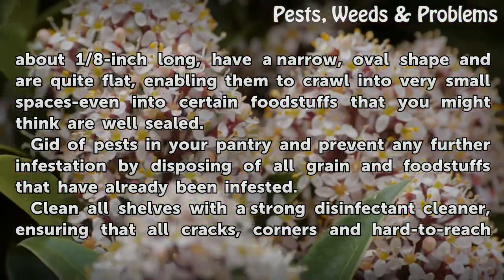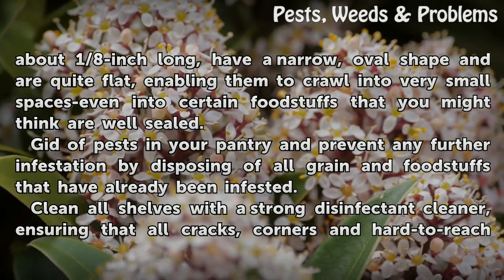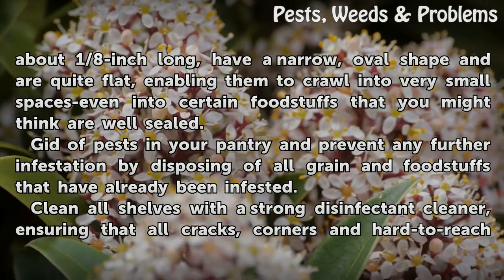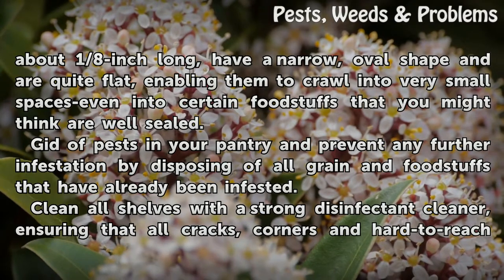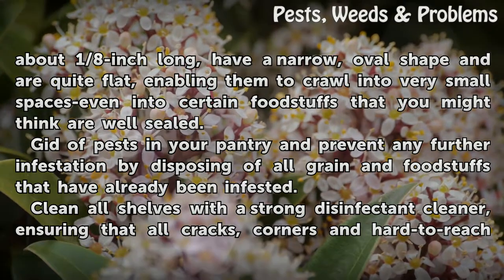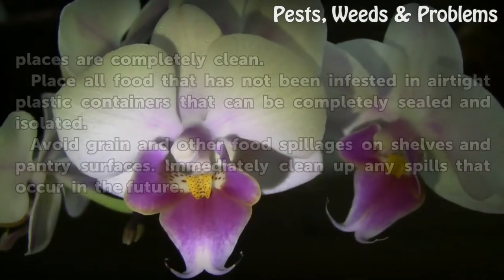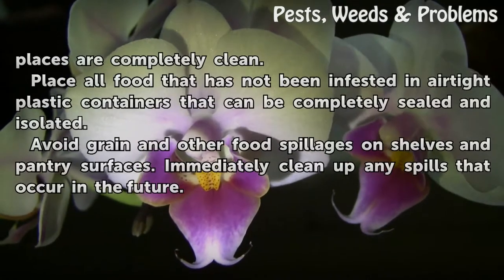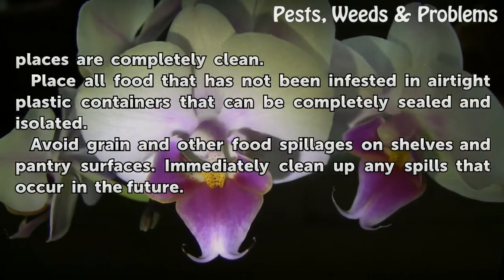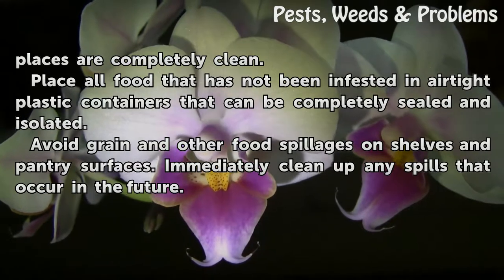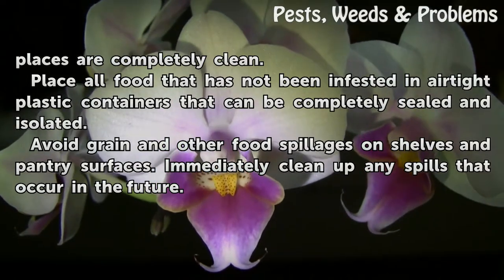To get a pest in your pantry and prevent any further infestation, dispose of all grain and foodstuffs that have already been infested. Clean all shelves with a strong disinfectant cleaner, ensuring that all cracks, corners and hard-to-reach places are completely clean. Place all food that has not been infested in airtight plastic containers that can be completely sealed and isolated.